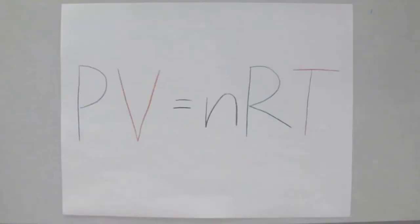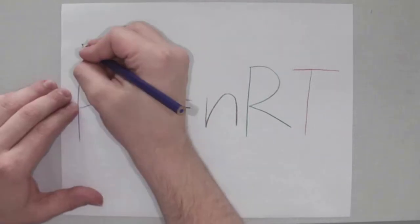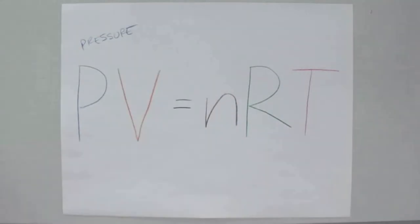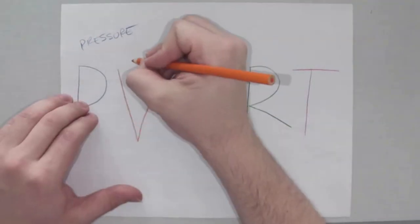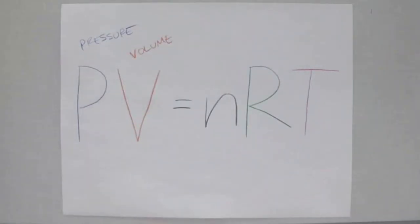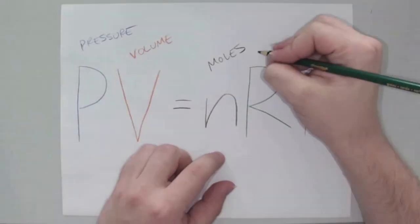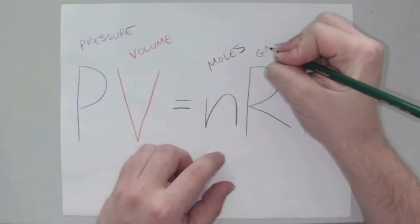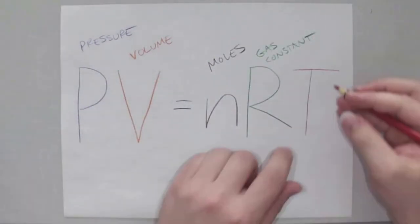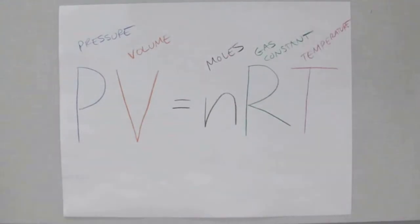So back to PIVNERT. Here we have five different terms. The first one is P for pressure. Next is V for volume. We have N for moles. We have R, which is the gas constant. And we have T, which is temperature. We know what each of these terms is in theory, but let's look at what each of these might look like.